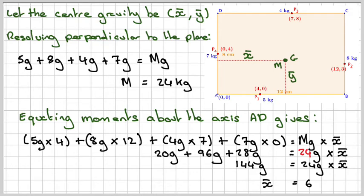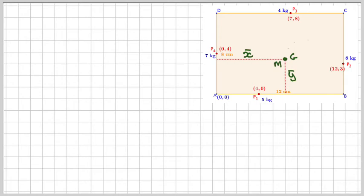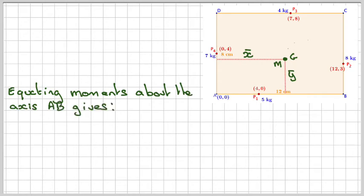Right, now taking moments about this point here. So equating moments about the axis AB. So it's this one here. We'll now look at the y-coordinates of each of these. So the first one will be 5G times 0. Next one will be 8G times 3. The next one will be 4G times 8. And the next one will be 7G times 4.